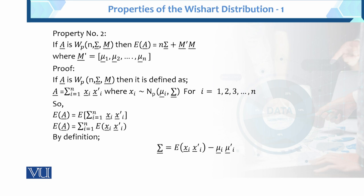Now this is Property Number 2. If A is Wishart with parameters n, sigma, and M — where M is the non-central parameter — then the expected value of A equals this expression shown here, where M is the mean of the vector. This is the property we will prove.